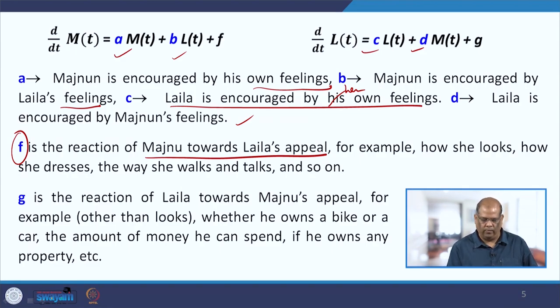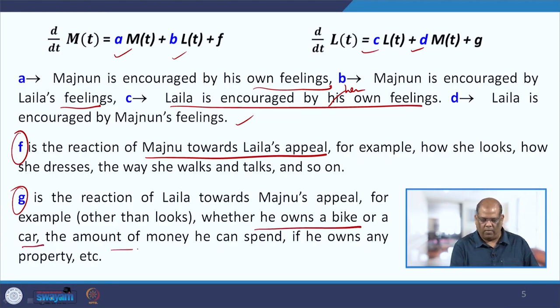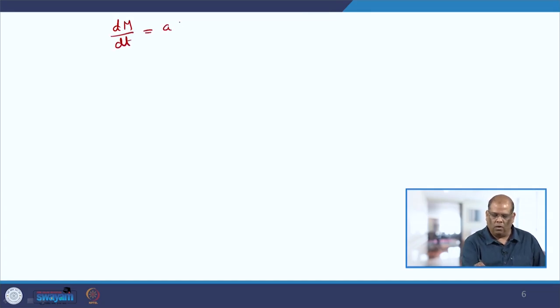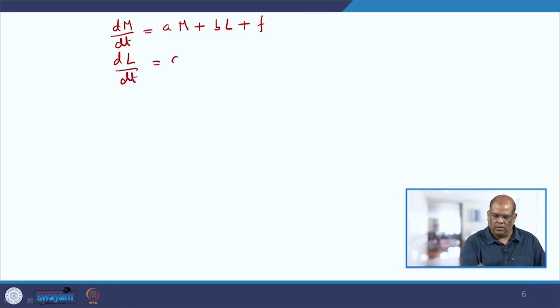Similarly, G is the reaction of Laila towards Majnu's appeal — for example, other than looks, whether he owns a bike or a car, the amount of money he can spend on a date, whether he owns property, and his social background. These can also be positive or negative. Now let us look into the analysis, setting dM/dt = A·M + B·L + F = 0 and dL/dt = C·L + D·M + G = 0.